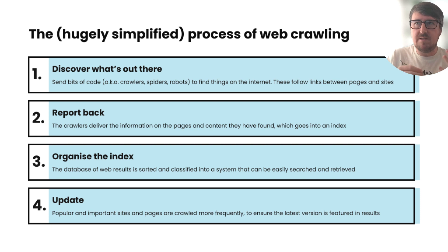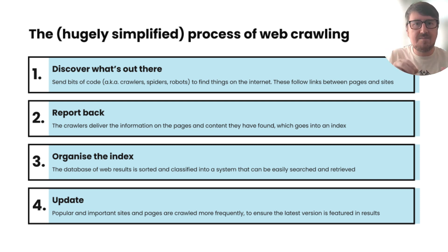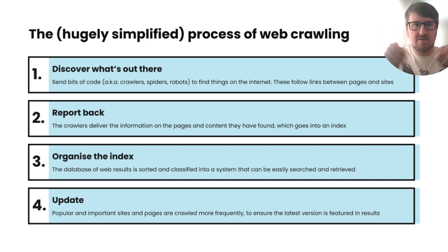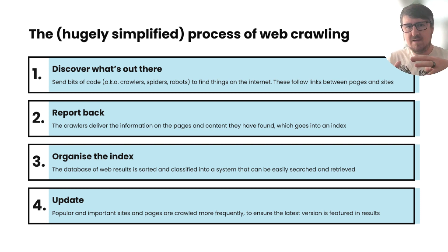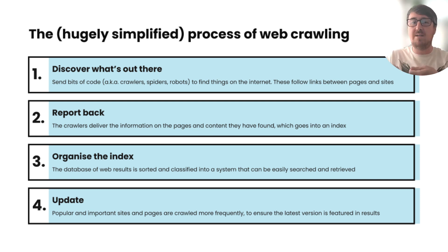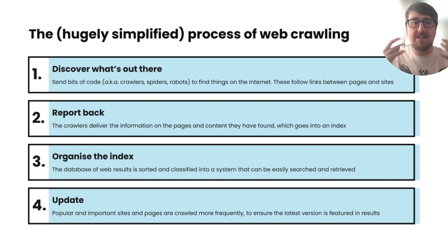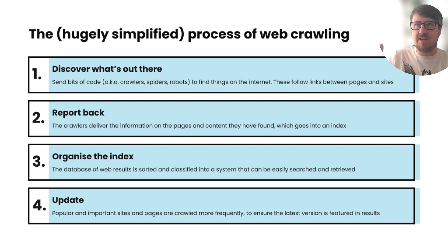The most famous ones are Googlebot and Googlemobilebot. These traverse the internet, identifying links between pages and websites, and moving from one to the other — effectively spidering across the web and following the links between and within websites. They then report back with this information, identifying useful content and placing it into an index. The index is then organised, and that's where we start talking about the algorithm. Essentially, it's a database of websites sorted and classified into a system that allows for easy searching and retrieval.